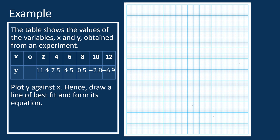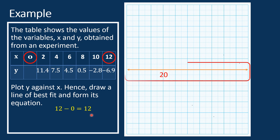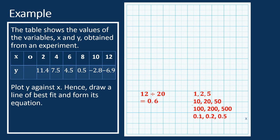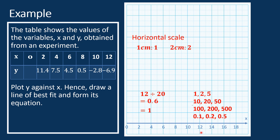Now let's determine the scale of the horizontal axis. The minimum and maximum values of x are 0 and 12 respectively. Hence, the range is 12 minus 0, which is 12. The graph used in SPM is usually 20 by 24, which means there are 20 units on the horizontal axis. 12 divided by 20 equals 0.6 per unit. However, 0.6 is not a suitable scale. Suitable scales are 1, 2, or 5, and their multiples such as 10, 20, 50, 100, 200, 500, or 0.1, 0.2, 0.5. We must choose a suitable scale slightly greater than 0.6, which is obviously 1. Therefore, the horizontal scale is 1 cm to 1 unit, or 2 cm to 2 units.